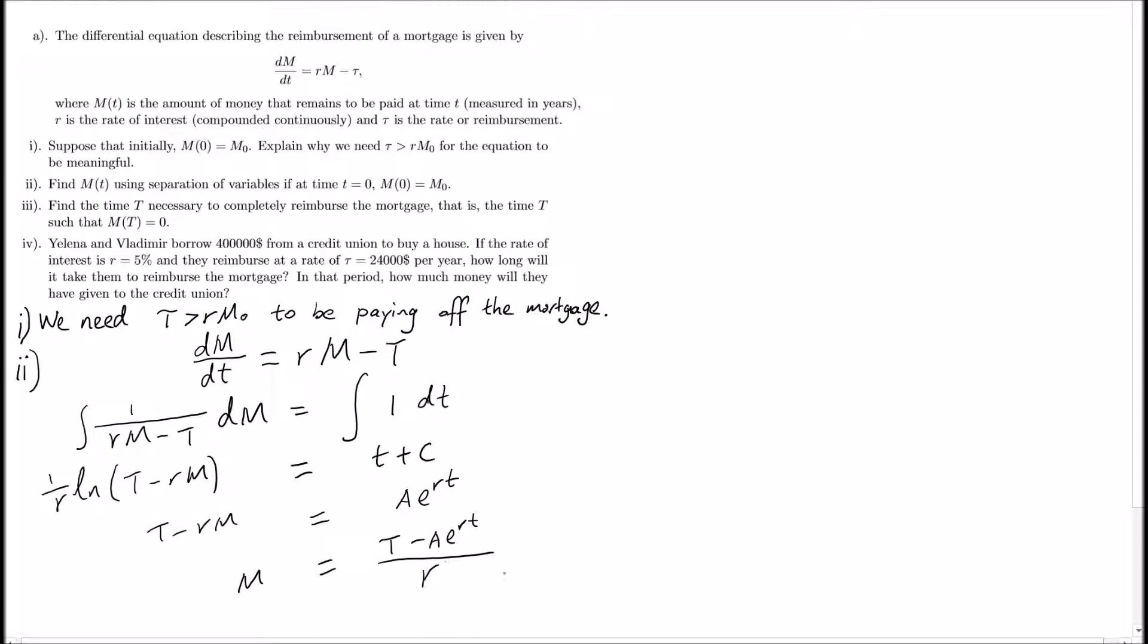Now we need to use initial variables to find the parameter A. At t equals 0, we have M(0) equals (T - Ae^0)/r, which simplifies to (T - A)/r.